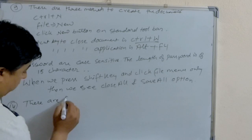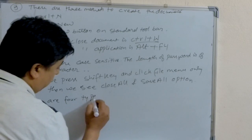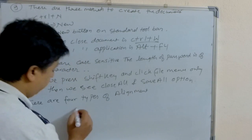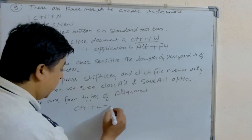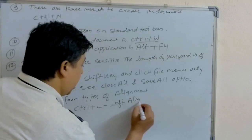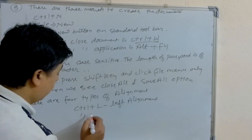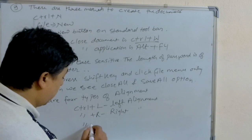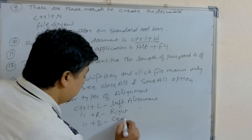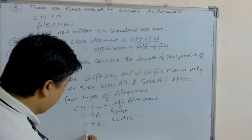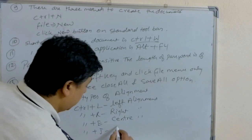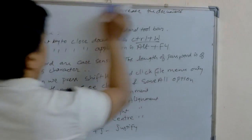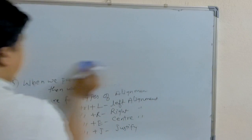There are four types of alignment. Control+L for left alignment, Control+R for right alignment, Control+E for center alignment, and Control+J for justify. So the four alignment types are: left, right, center, and justify.